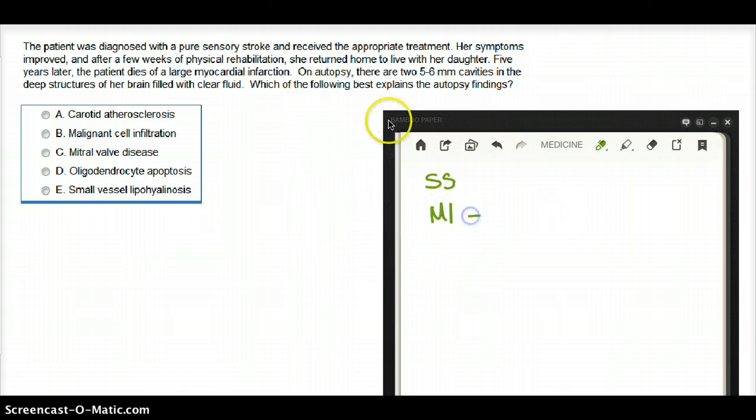She died of that. On autopsy, there are two 5-6mm cavities in the deep structures of the brain filled with clear fluid, which of the following best explains the autopsy findings.